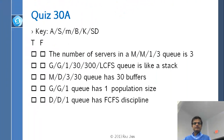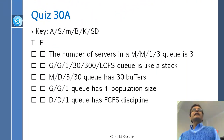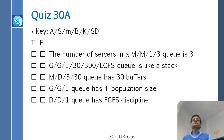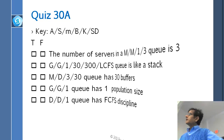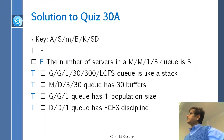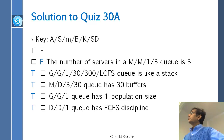Here's a quiz. The number of servers in an M/M/1/3 queue — write it down. The answer: the number of servers is one. M/M/1 means one server. The '3' here refers to another parameter, not the number of servers.